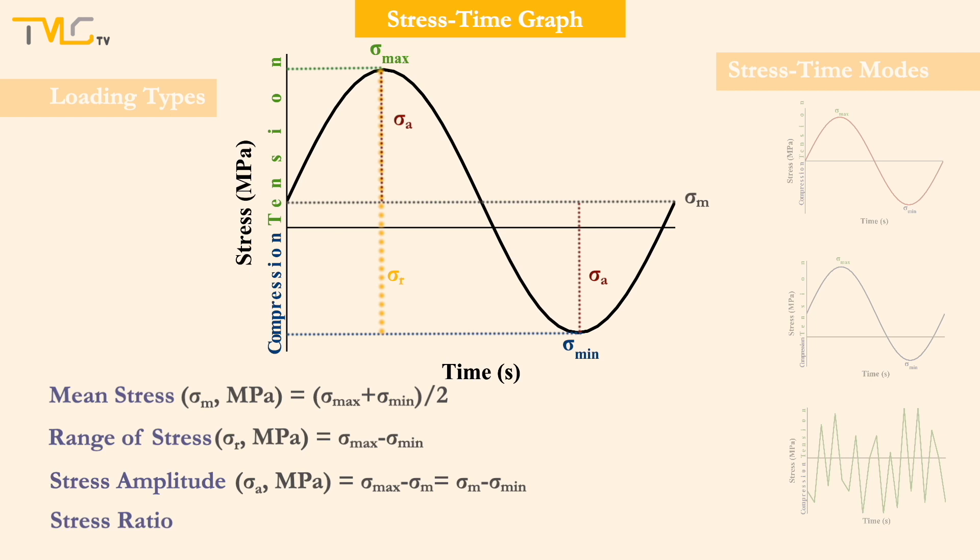Lastly, the stress ratio is denoted as r, and is the ratio of minimum stress amplitude to that of the maximum stress. Now, let's move on to the cyclic stress time modes.